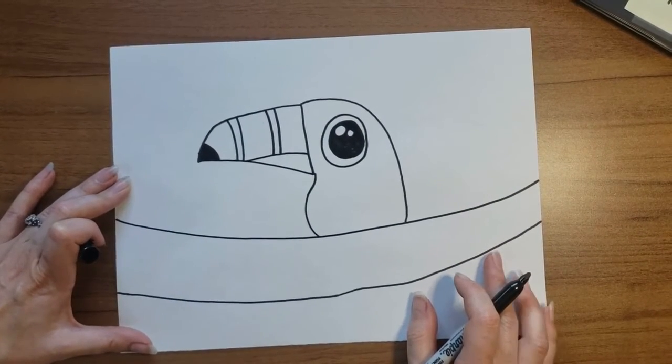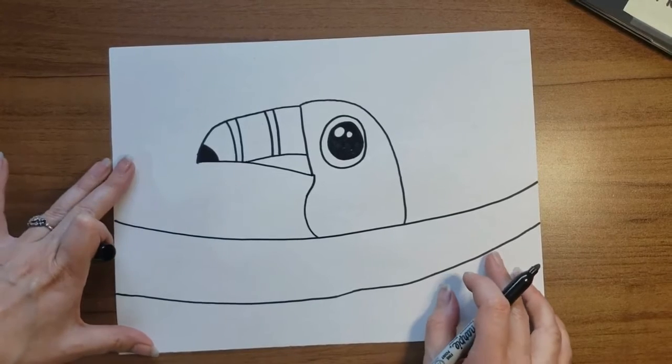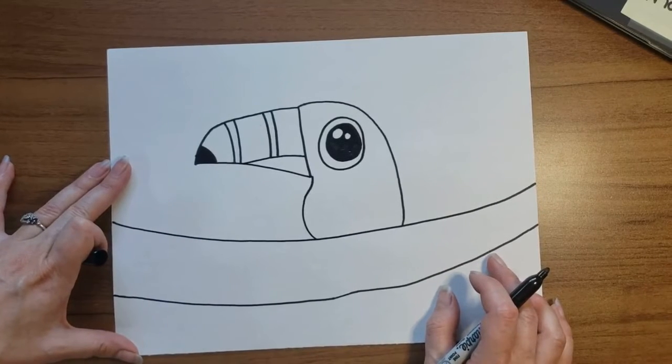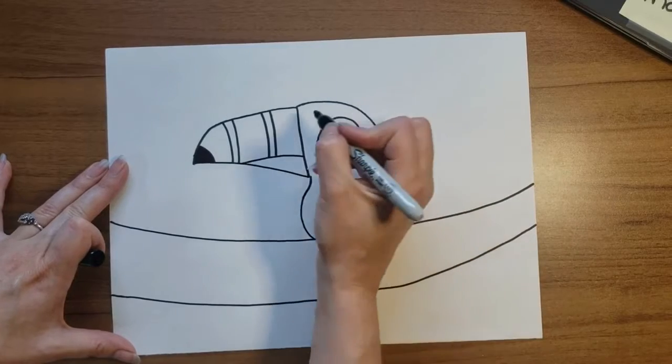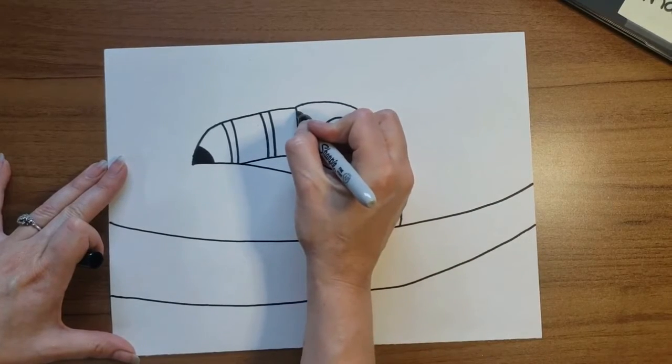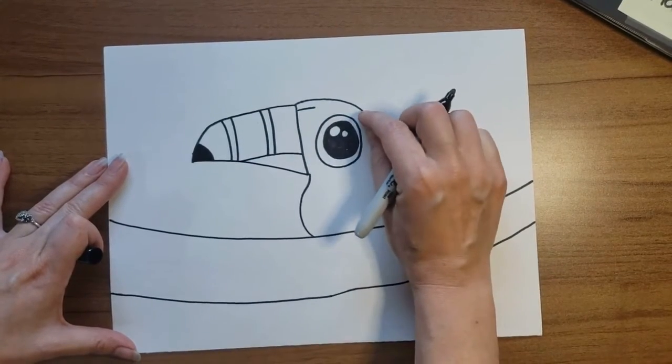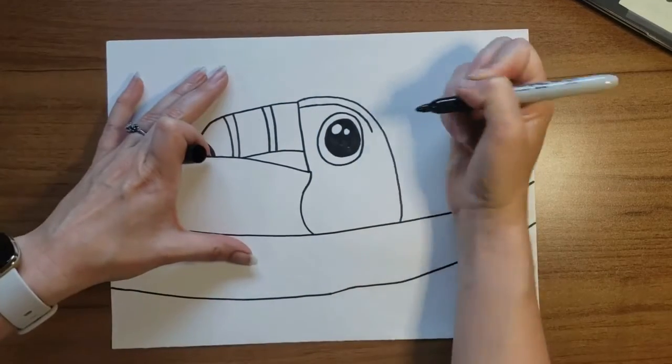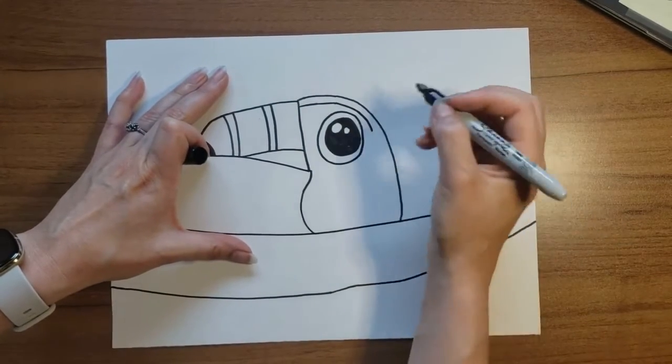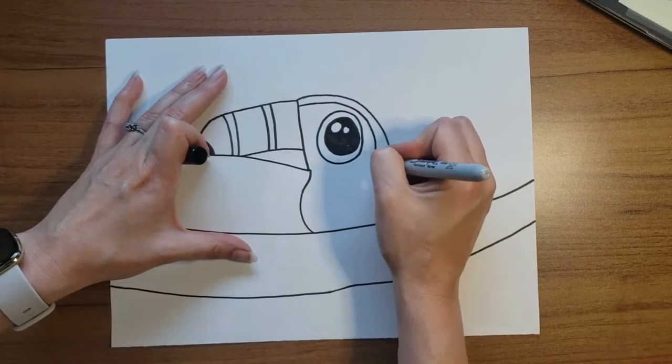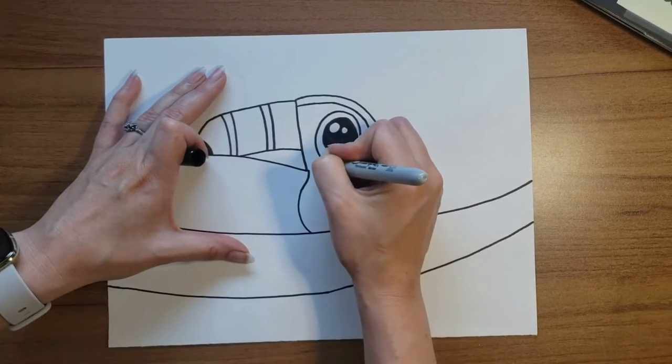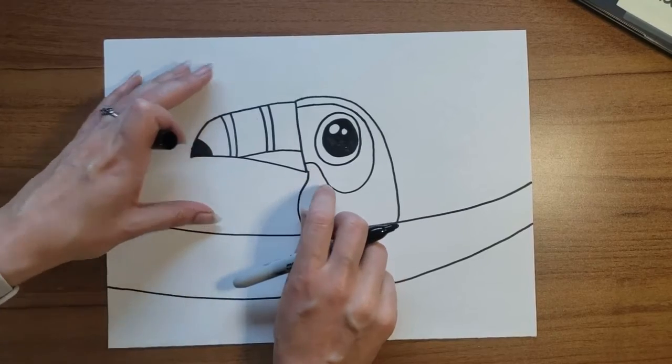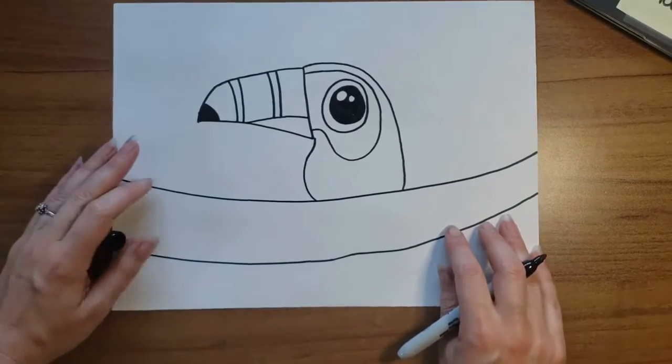Now toucans are usually black and they have a white spot around their eye, so we are going to draw the white spot. You start up at the top of his head and make sure you come between the back of his head and his eyeball. Then you start to curve down with the eye and you want to make it like a drop of water, and then come back to the front of his face where the beak is.